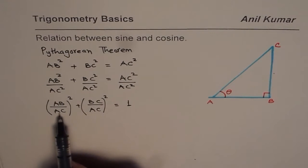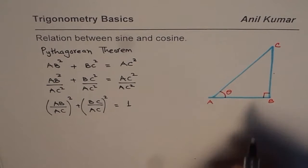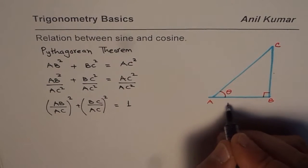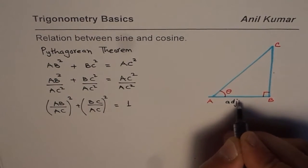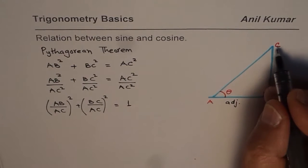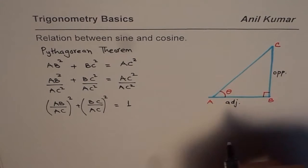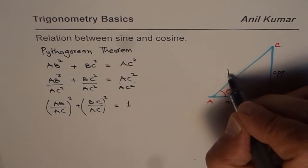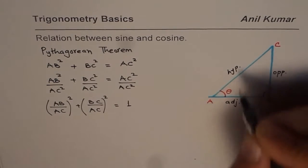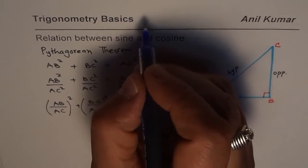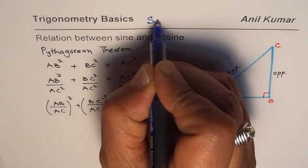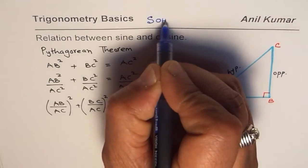Now what is AB over AC? AB for angle theta is the adjacent side. And CB is the opposite side. AC is hypotenuse. Let us recall SOHCAHTOA. Sine is the ratio of opposite over hypotenuse.